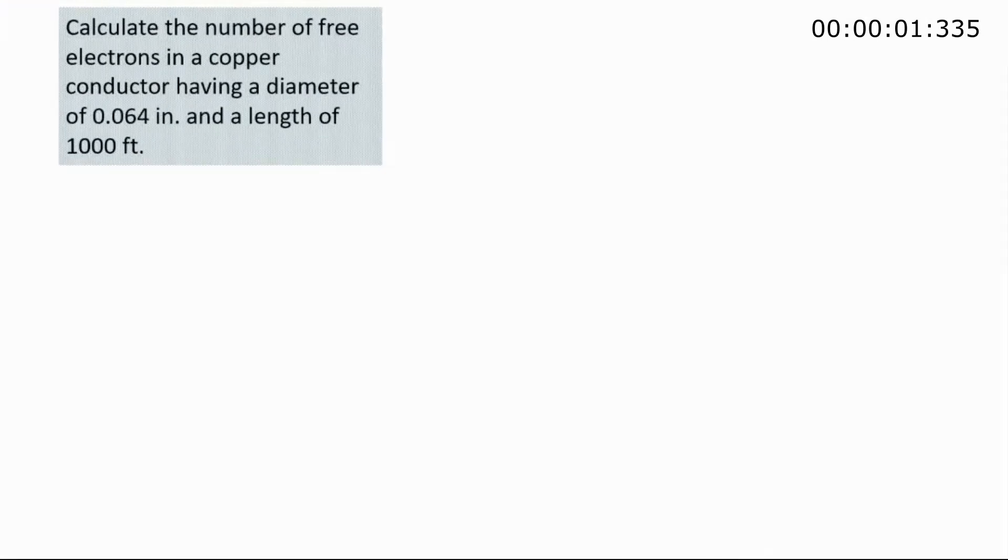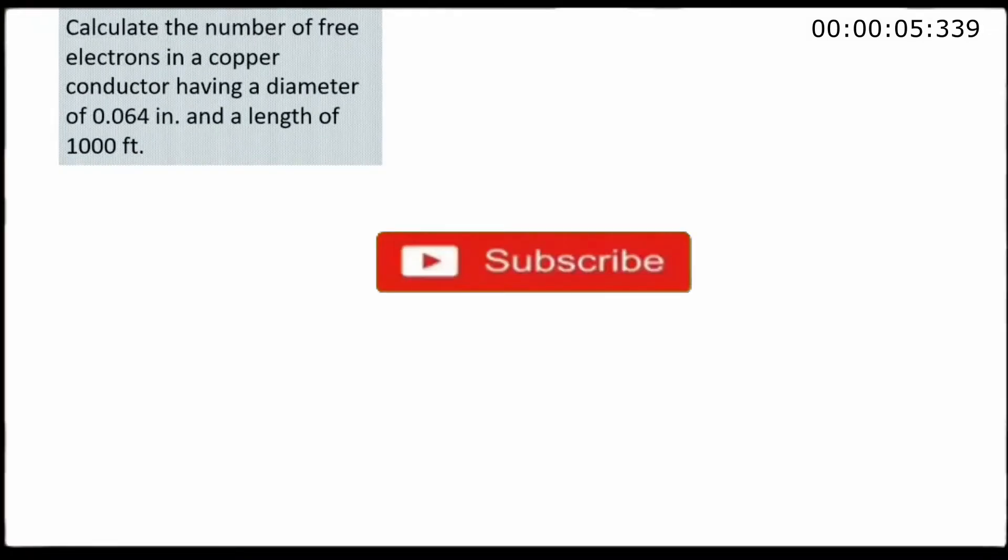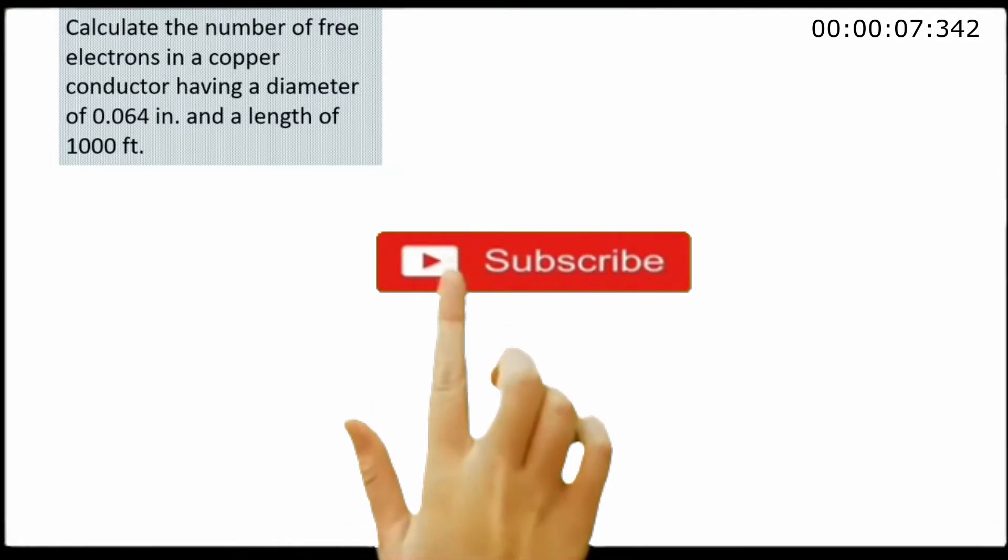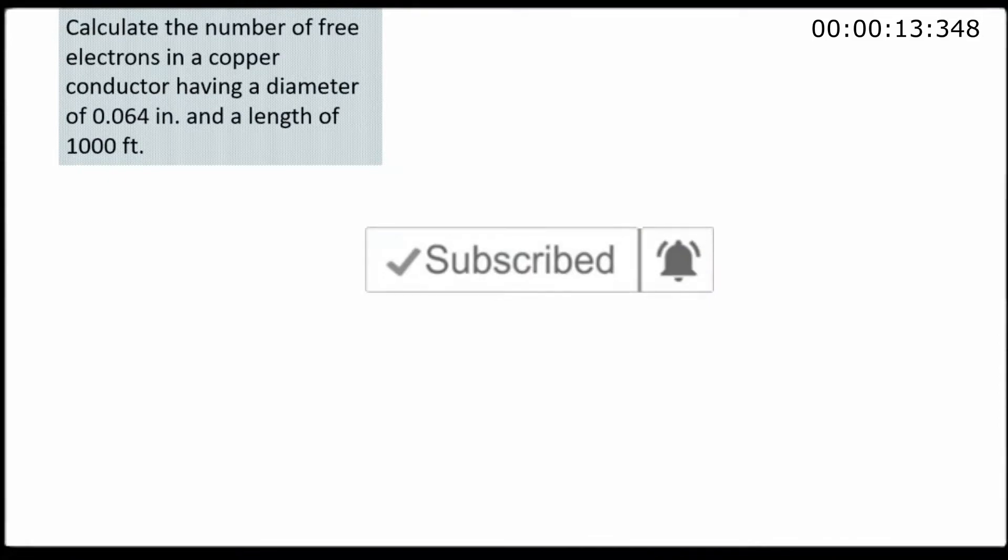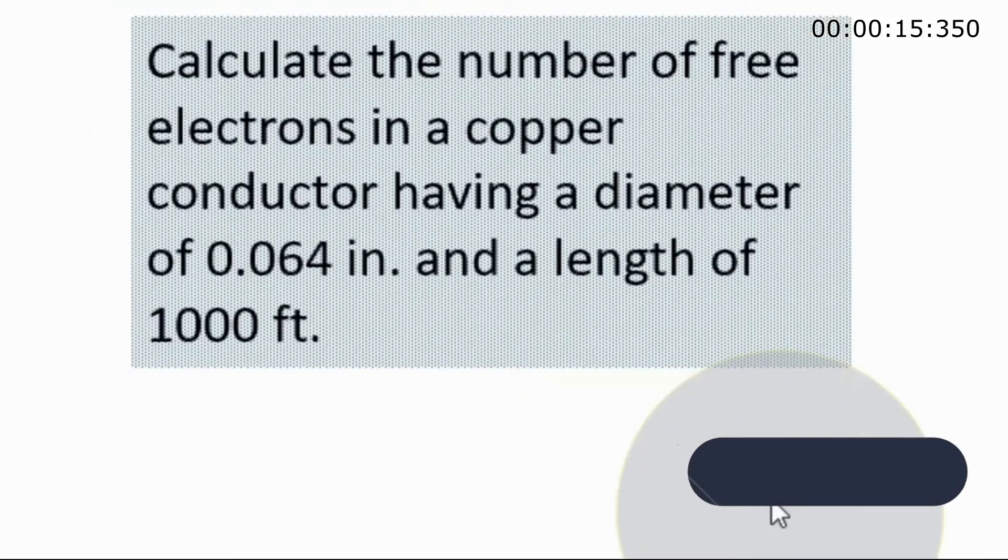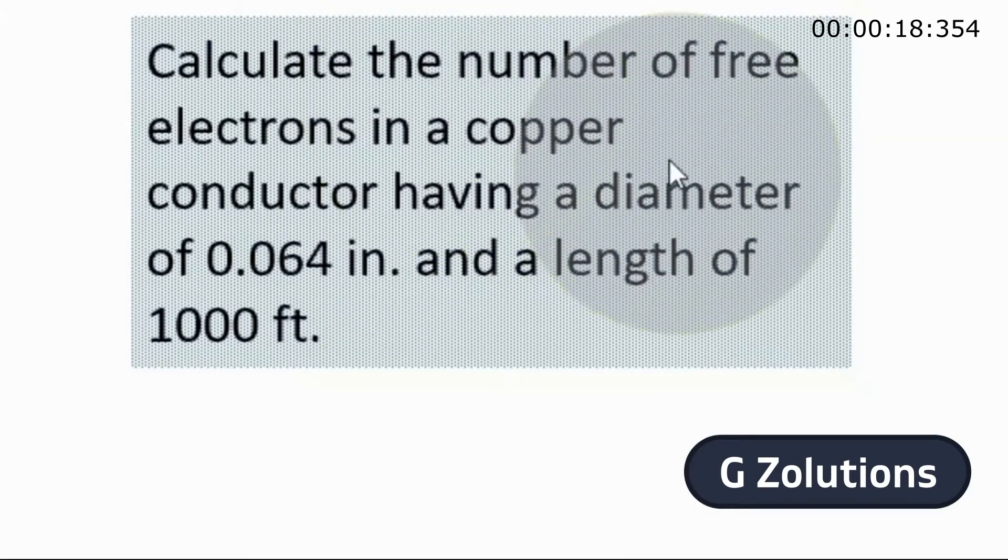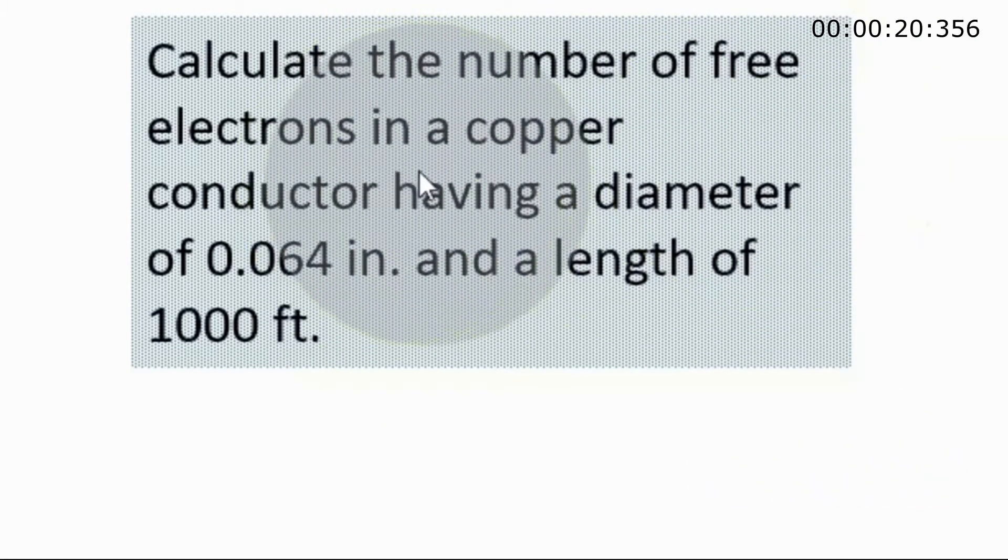Hello guys, a good day to all of you. Again, let us have this very simple problem in circuit analysis in basic electricity. According to the problem, you are to calculate the number of free electrons in a copper conductor having a diameter of 0.064 inches and a length of 1000 feet.